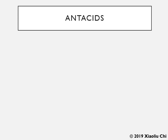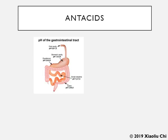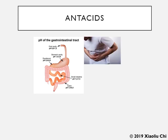Different organs and fluids in our body have different pH values. Our stomach, for example, can have a pH value as low as 1.5, which is quite acidic. At times, the stomach can overproduce hydrochloric acid, a condition called gastric hyperactivity. Symptoms include heartburn, sour stomach, and acid indigestion.